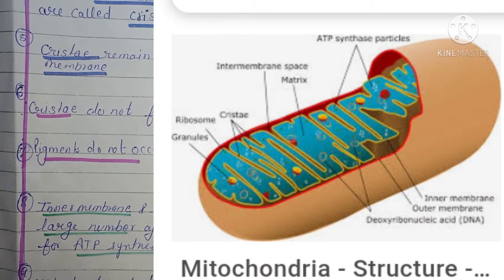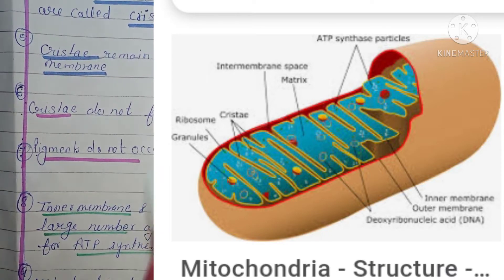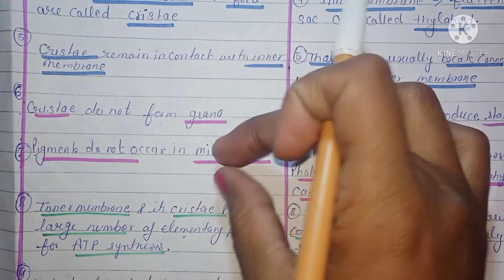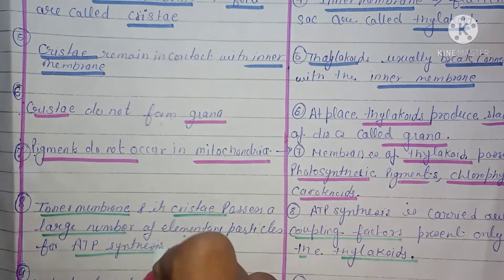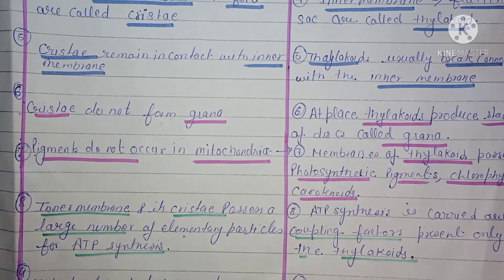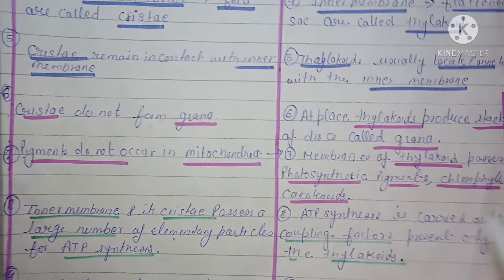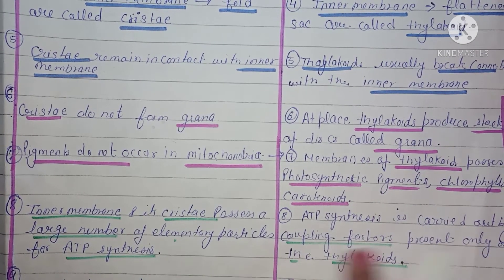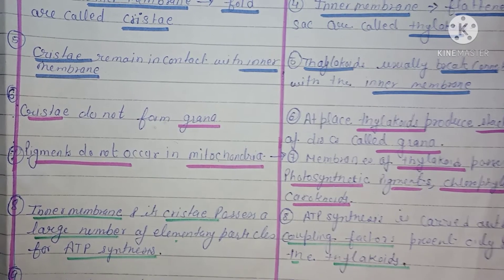Mitochondria ki inner membrane mein cristae ki bajah se large surface area present hoti hai. Us large surface area mein ATP synthesis process hoti hai. ATP synthesis is carried out by a coupling factor, jo thylakoids mein present hota hai.